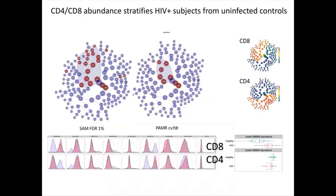Of course, we expected to see the CD4/CD8 ratio shift in HIV individuals, which is a hallmark of HIV infection, and indeed that was reflected in our Citrus results when we did the abundance run — we found change in CD4 and CD8 percentages. An anecdote: you can see both SAM and PAM models here, and SAM finds more clusters to be significant. That goes back to why we prefer PAM for more stringent results — SAM is definitely including things that we don't necessarily follow up as significant by other methods.